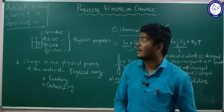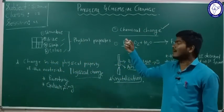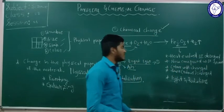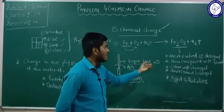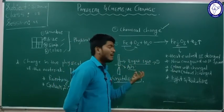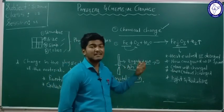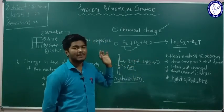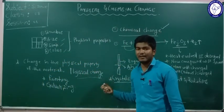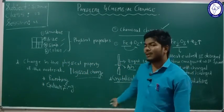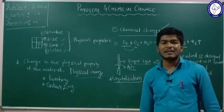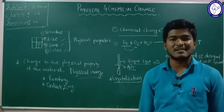In this chapter, you studied what is meant by physical change, what are the physical properties, what is meant by chemical change, and what are the properties of chemical change — where heat is evolved or absorbed, new compound is formed, color changes, smell or odor changes, and light is radiated. You also learned how to prevent rusting of iron and studied crystallization. This completes the chapter on physical and chemical change. In the next session, we will continue with the next lesson. Thank you.